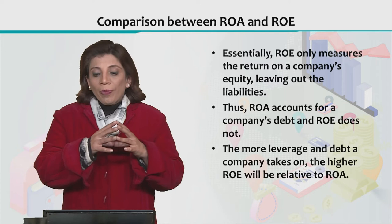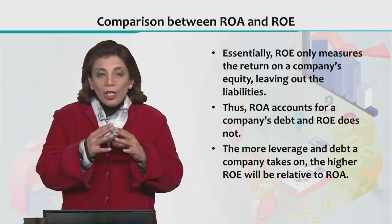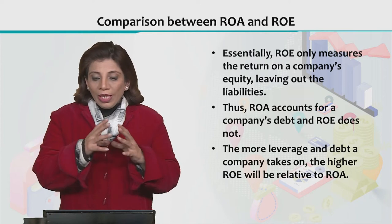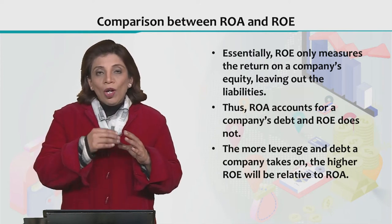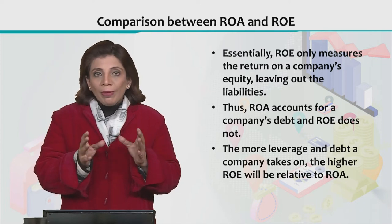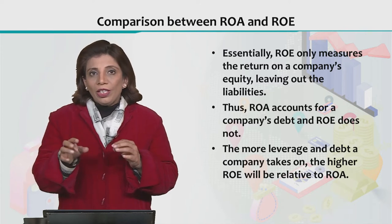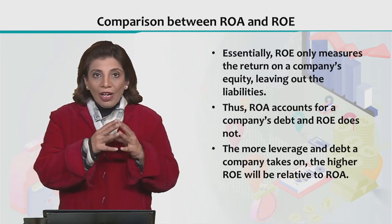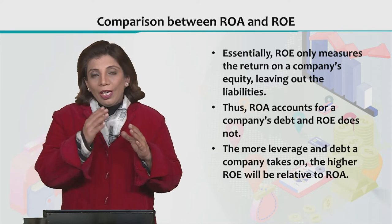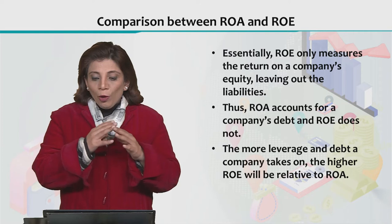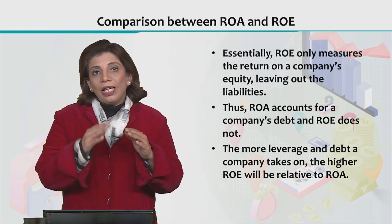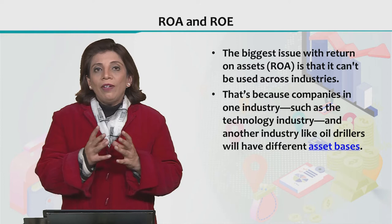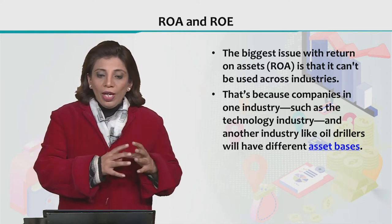These two ratios measure a company's financial performance from two different perspectives. One measures return on a company's equity and does not consider liabilities, while the other considers the company's debt. If the value of leverage and debt are higher for a company, then the ROE value will be higher as compared to ROA. This is what we need to understand when evaluating the financial performance of a company using ROE and ROA.